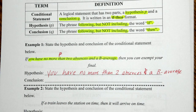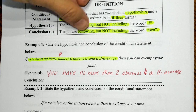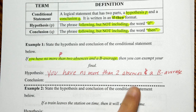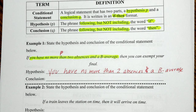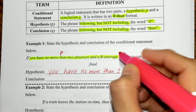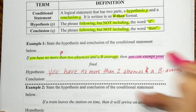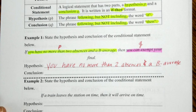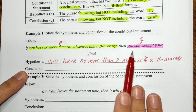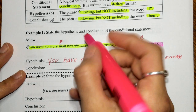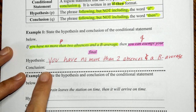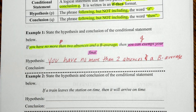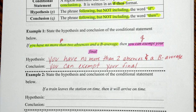Now for the second highlighter, I'll highlight the conclusion — the phrase following but not including 'then.' So after 'then' until the period, the conclusion Q is: 'you can exempt your final.' Notice: no word 'then,' not highlighted, not included, and no punctuation — just those two parts.